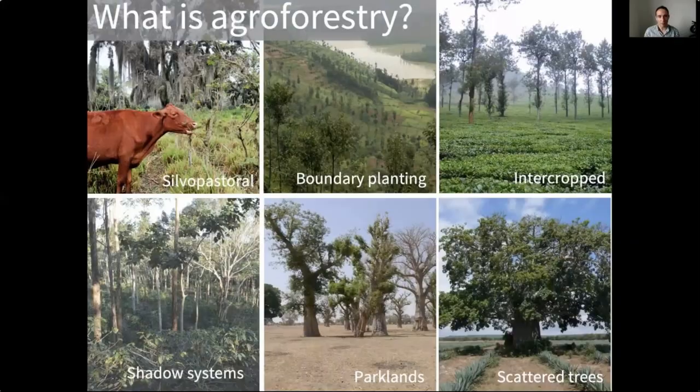What is agroforestry? Agroforestry is the integration of trees with crops and livestock. These trees could be planted, they could be regenerating naturally, or they could be maintained after land use change. It's important to recognize that agroforestry is everywhere. The most iconic and productive landscapes throughout the world are often agroforestry. Think about the silvopastoral systems that range across Latin America, or the dryland parkland systems that cover West Africa. Because of the great variety of species and management options available to farmers, there are at least hundreds, if not thousands, of permutations of agroforestry systems available.